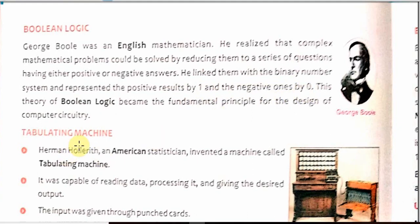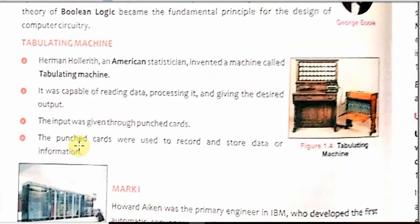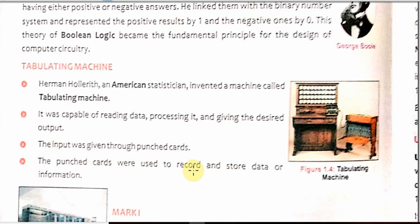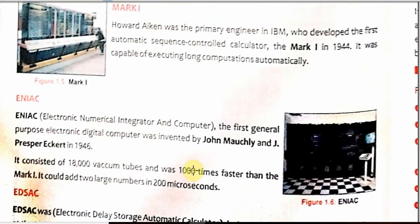The next machine was the tabulating machine. It was invented by American statistician Herman Hollerith. It was capable of reading data, processing it and giving the desired output. This is the tabulating machine — it was a big machine. The input was given through punch cards, which had holes. Punch cards were used to record and store data or information.